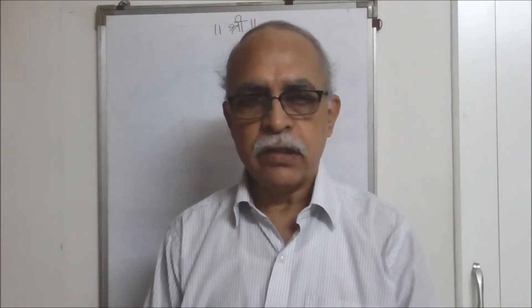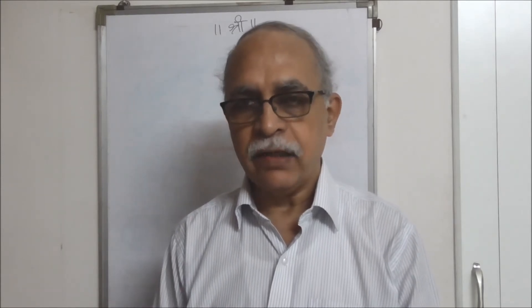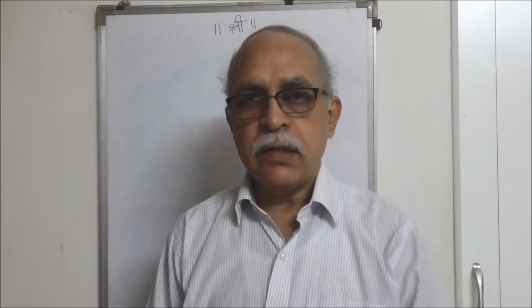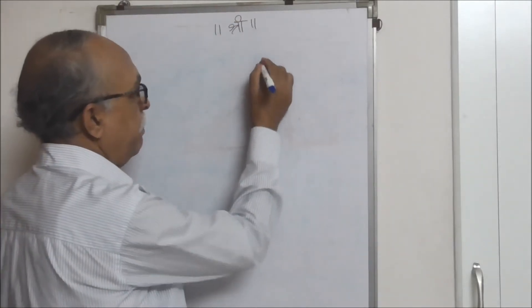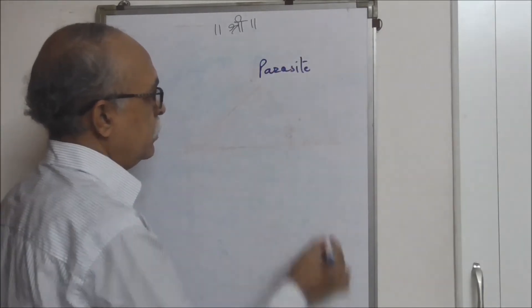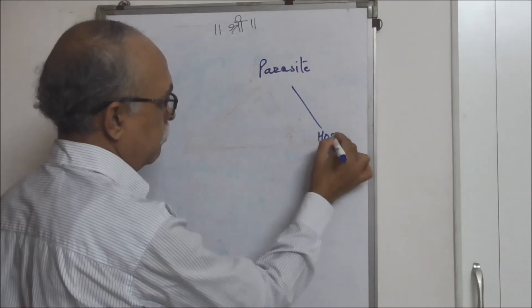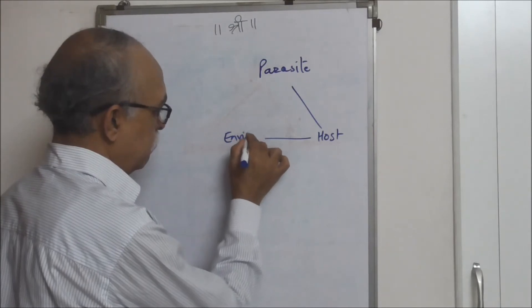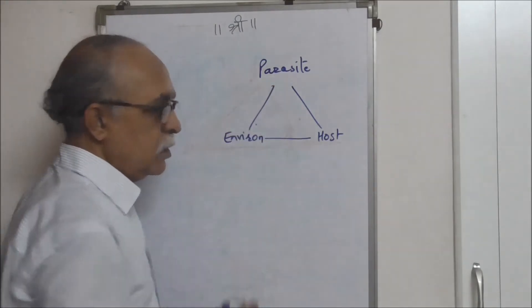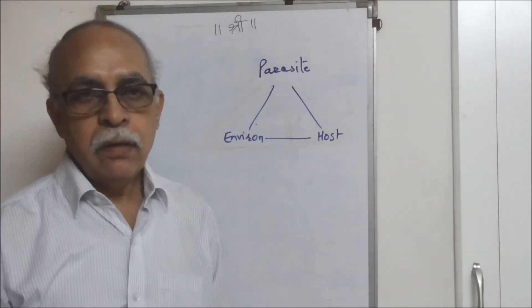Now let's have another session on Parasitology. In the first session we had a detailed discussion on the host part of the parasitic cycle. Now when I start talking about the parasitic cycle, or for that matter the concept of epidemiology, there is a significant triad in it. There are three points in it: the parasite, the host, and the environment. And that forms a triad.